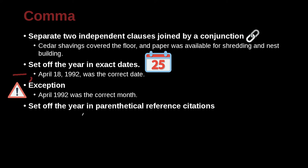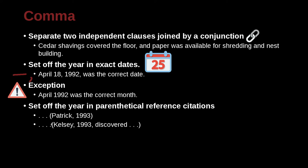You can also use a comma in a parenthetical reference or citation. For example, in APA style: 'Patrick, 1993.' In MLA style we do not use the comma, but we'll look at that later. Another APA example: 'Kelsey, 1993, discovered something.' We separate the name from the year with a comma, and we also separate out the citation at the end.